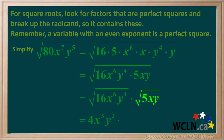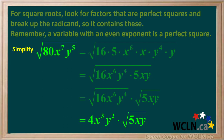The square root of 5xy cannot be simplified, so we just bring it down here. So we're left with 4x cubed y squared times the square root of 5xy. We'll summarize by stating that the square root of 80x to the 7th y to the 5th is equal to 4x cubed y squared times the square root of 5xy.